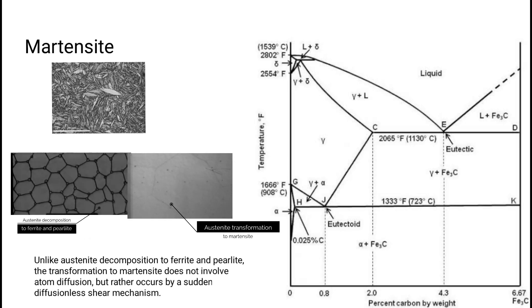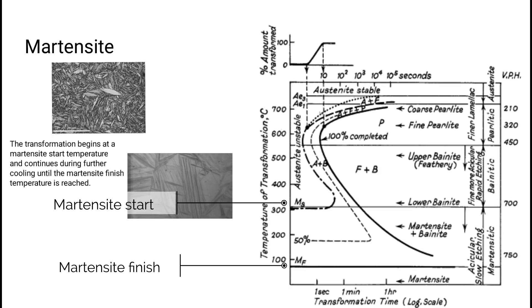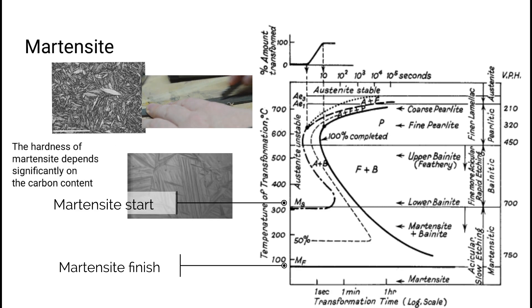Unlike austenite decomposition to ferrite and perlite, the transformation to martensite does not involve atom diffusion but rather occurs by a sudden diffusionless shear mechanism. The transformation begins at a martensite start temperature and continues during further cooling until the martensite finish temperature is reached. The hardness of martensite depends significantly on the carbon content.